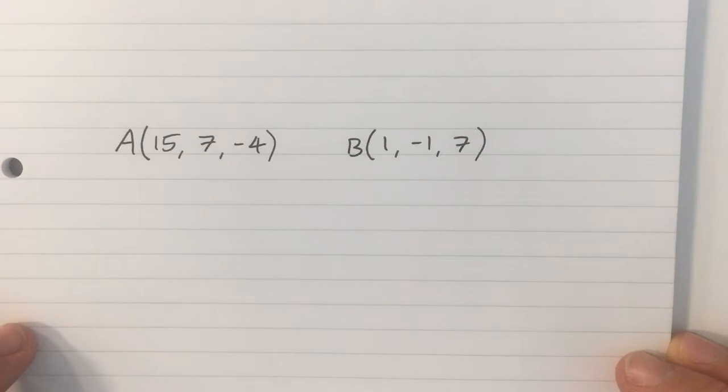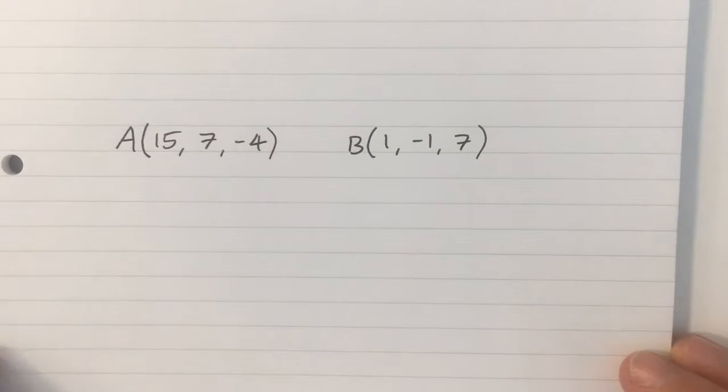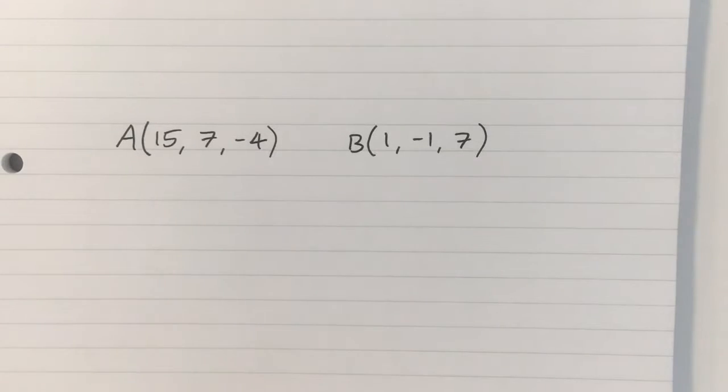Another example, we want to find the vector equation of the line that goes through these two points. Notice the subtle difference now between this example and the previous. In the previous we had a point and a direction, this time we've got two points.